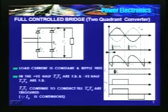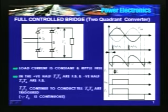At alpha, T1 and T2 are triggered, and at pi plus alpha, T3 and T4 are triggered. Till you trigger T1 and T2, T3 and T4 continue to conduct even in the positive half. Remember, load current is continuous, therefore at any given time 2 devices should be on. In the previous negative half, we had triggered T3 and T4 at pi plus alpha, so till you trigger T1 and T2, they continue to conduct even in the positive half.